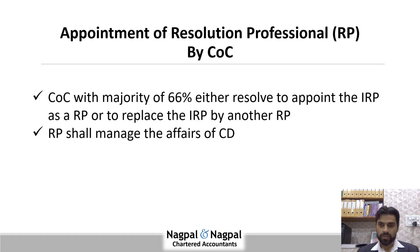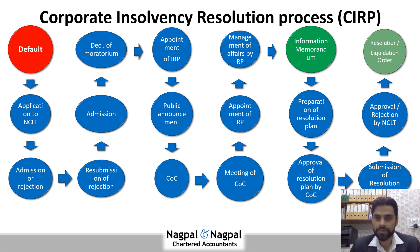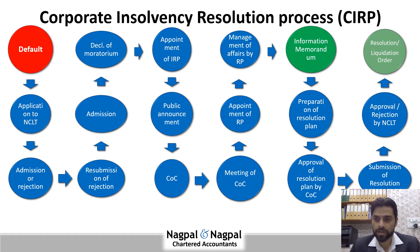Appointment of Resolution Professional by CoC: the CoC with a majority of 66% either resolves to appoint the existing IRP as RP or replaces the IRP with another RP. The RP shall then manage the rest of the affairs of the corporate debtor. One of the key tasks the RP performs is to prepare the Information Memorandum. I have shared a separate video on the roles and responsibilities of RP and IRP.